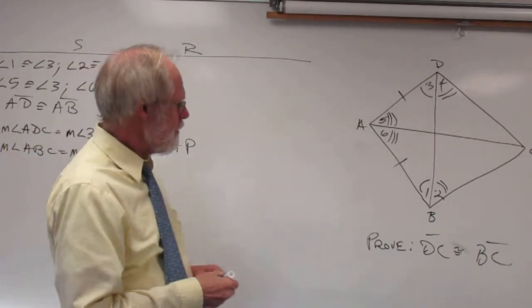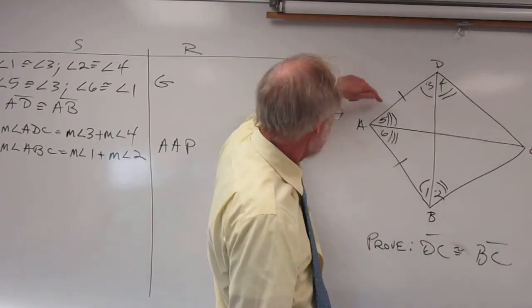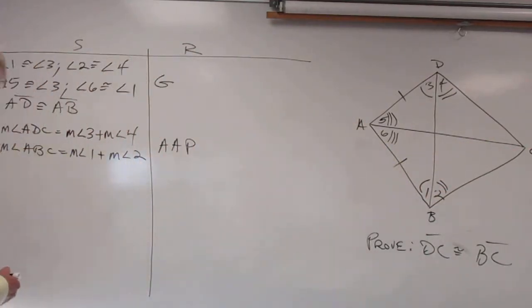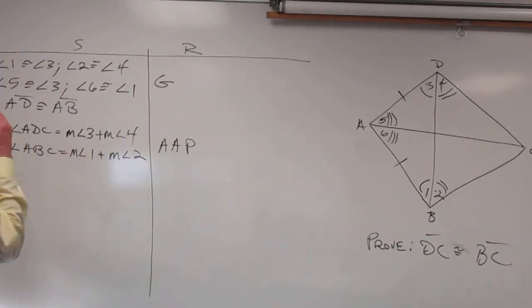Now, step 3, we would like to be able to get angle ADC congruent to angle ABC. What we have at the moment, and I think we're going to have to change some of these into equals rather than congruent, measure of angle 1 equals measure of angle 3.